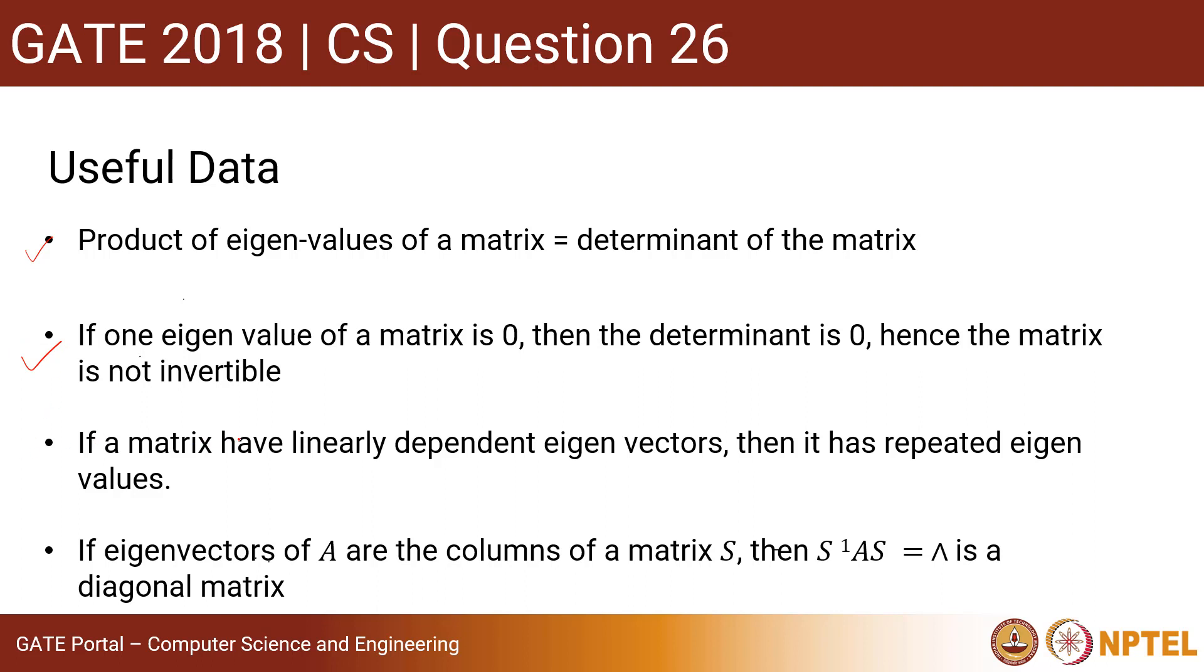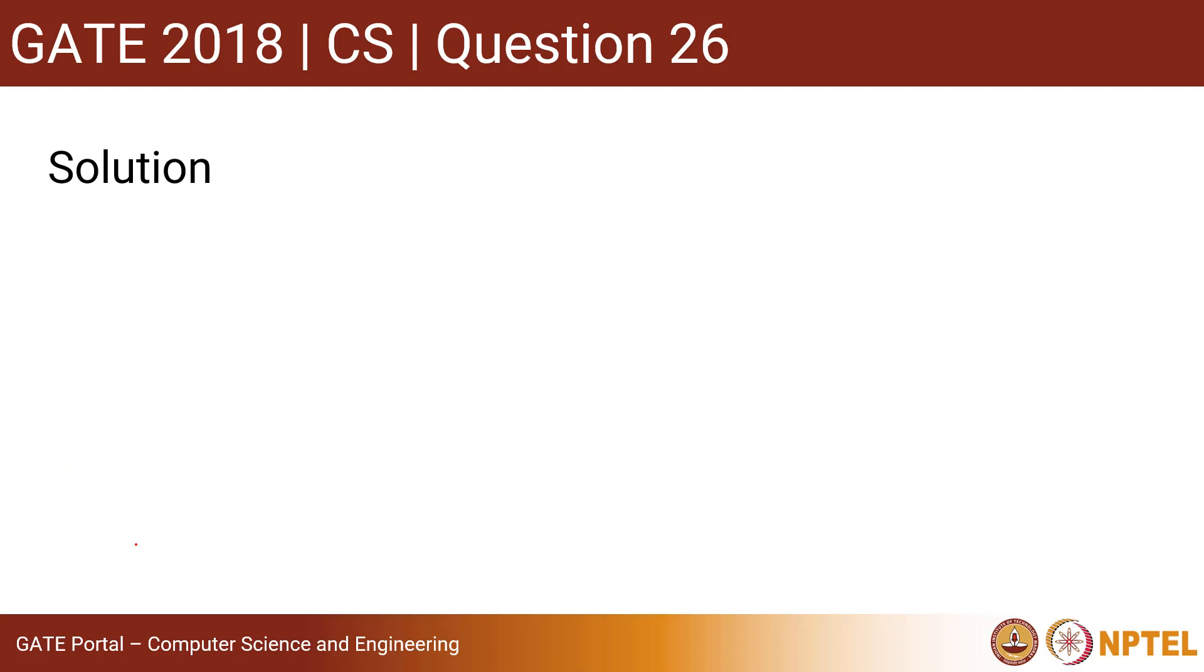If a matrix has linearly dependent eigenvectors, then it has repeated eigenvalues. If eigenvectors of A are the columns of a matrix X, then S inverse AS equals a diagonal matrix. Now let's get into the solution.